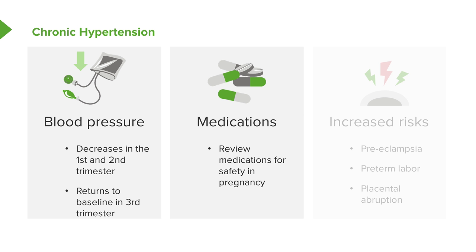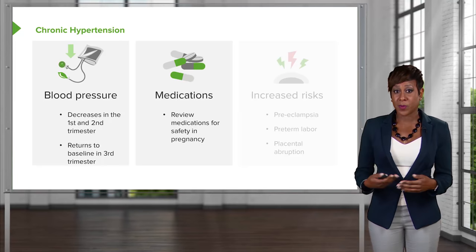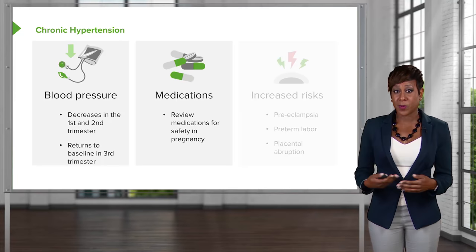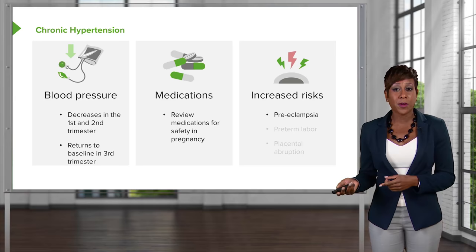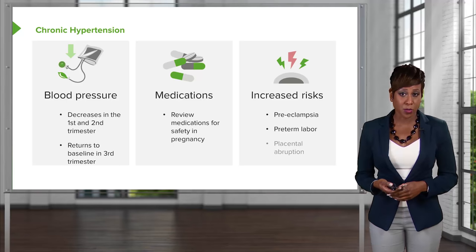For example, lisinopril — an ACE inhibitor — can cause renal agenesis. When patients come in before pregnancy, we need to switch them to a safe medication such as labetalol, alpha-methyldopa, or nifedipine. We also need to make sure patients are aware that chronic hypertension in pregnancy increases complications throughout the pregnancy, most notably preeclampsia, preterm labor, and — especially if blood pressures are not controlled — an increased risk of placental abruption.